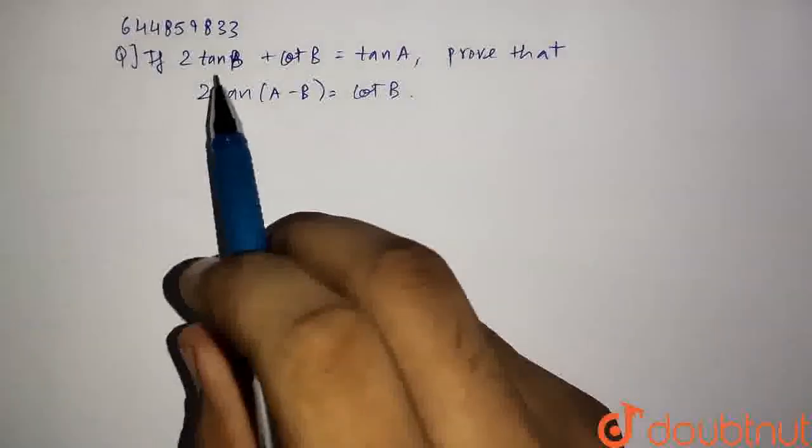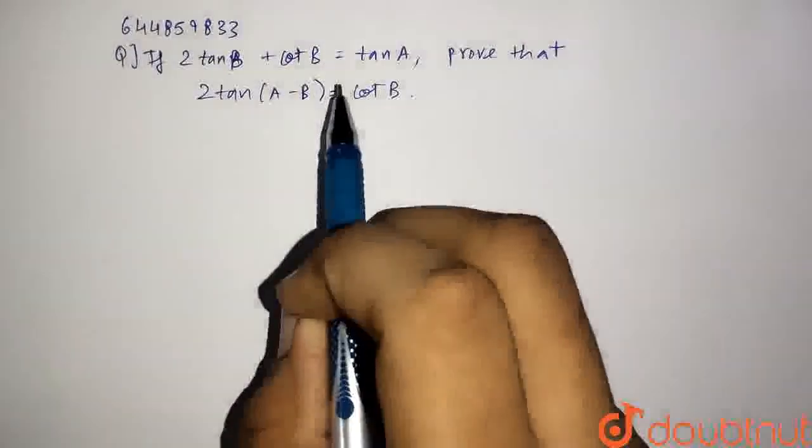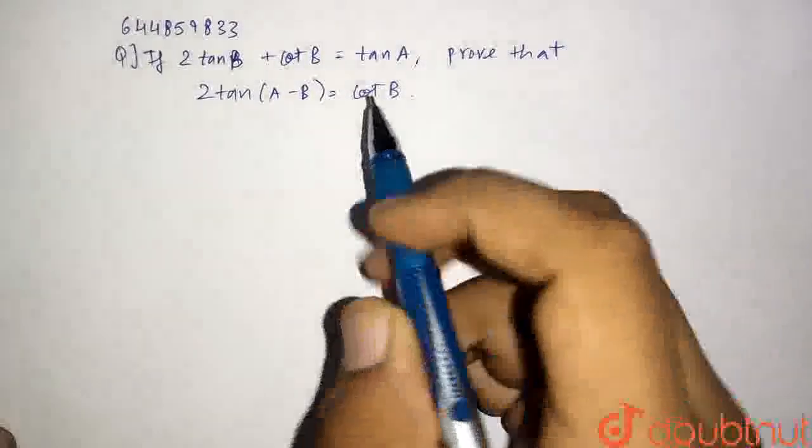Hello students, the question for today is: we are given 2 tan b plus cot b equals tan a. We have to prove that 2 tan of a minus b equals cot b.